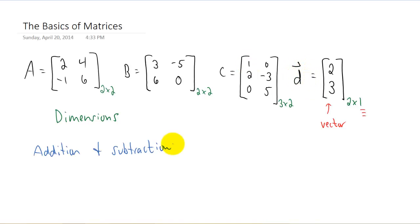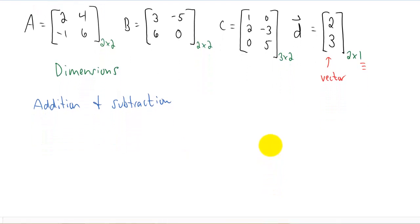There are a whole lot of things that we can do with matrices. The first one being addition and subtraction of matrices. So we can add matrix A plus matrix B. And if you've never learned anything about matrix algebra before, the way you add A and B is probably what you would think. You take each element in matrix A and add it to the same element in matrix B. So we're going to get 5, negative 1, 5, and 6.